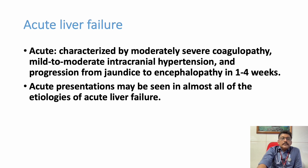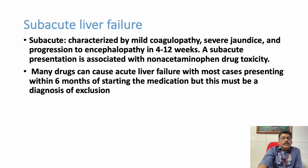Acute hepatitis due to various etiologies can develop into acute liver failure. Subacute hepatic failure presents with mild coagulopathy, jaundice, and progressive encephalopathy over 12 weeks. It mainly occurs with other types of drug toxicity such as anti-tubercular therapy (ATT)-induced hepatitis or any other drug-induced hepatitis.